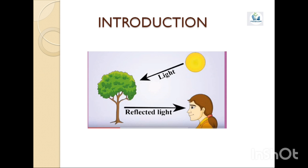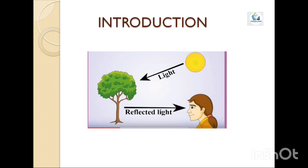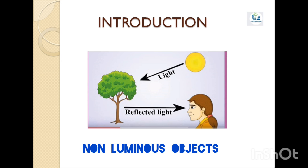Objects which emit their own light are called luminous objects. Now, as shown in this diagram, the girl is able to see the tree because light from the sun strikes the tree and then gets reflected from the tree and enters the eyes of the girl. So objects like the tree, the table, the chair — all these do not emit their own light, but we are able to see them when light from any source falls on them and gets reflected. Such objects are called non-luminous objects.